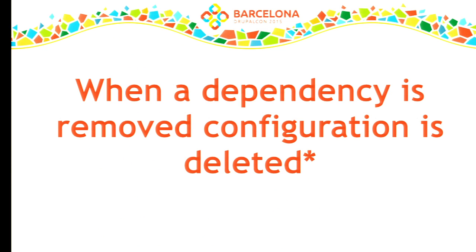The final principle is that when a dependency is removed, configuration by default is deleted. That's because we want to keep the system working. So the default case: if you delete a role and there are views that depend on it, it's going to remove the view. If you delete a field and there are views that depend on it, it's going to delete the view. If you delete a vocabulary and there are taxonomy terms that depend on it, the taxonomy terms can't exist. We don't want a broken system, because at the end of the day we want to be able to depend on configuration.